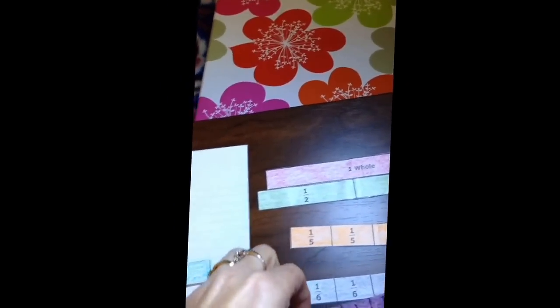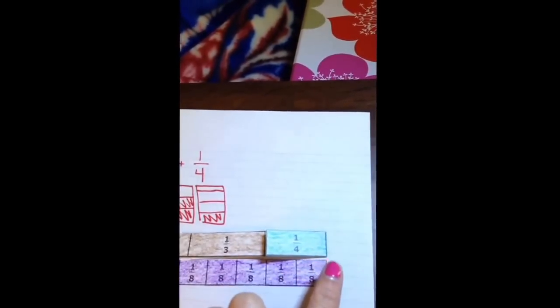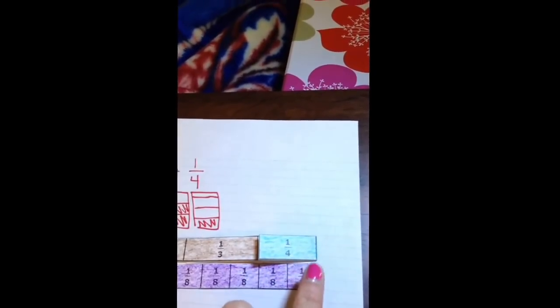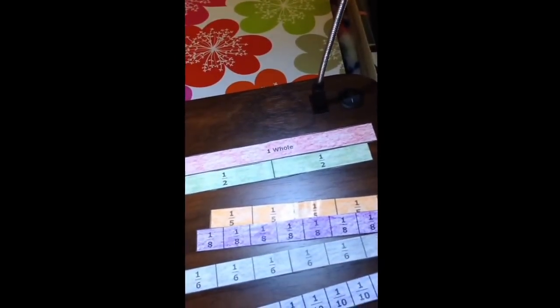So let's compare the eighths fraction strip. And we can see that eighths does equally represent one fourth, two eighths. But when we come down here to the thirds, it doesn't equally represent the two thirds. So we're going to try a different size.